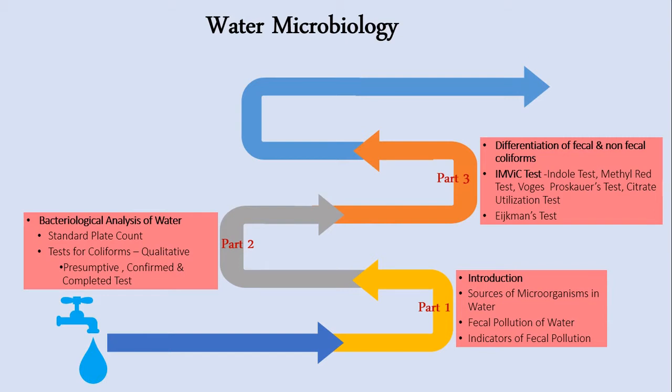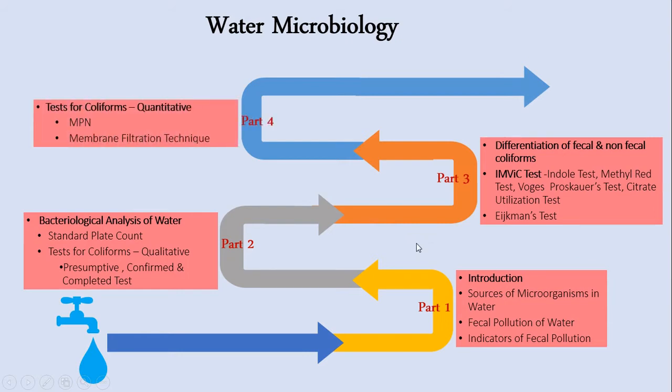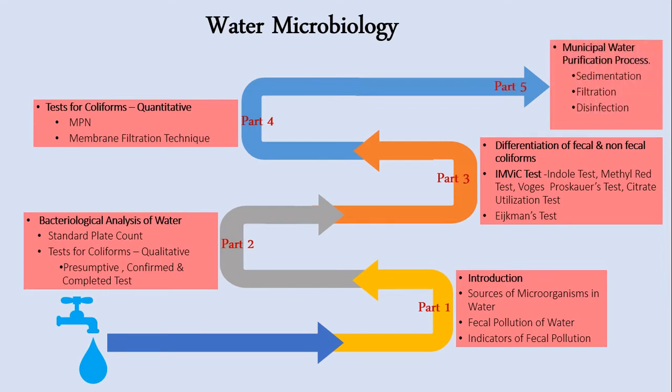In the fourth video, you will learn quantitative tests for coliforms that are used for the enumeration of number of coliforms in the water sample. The common quantitative tests are MPN and membrane filtration techniques. And in the fifth video, we will learn the municipal water purification process and its significance, including steps like sedimentation, filtration, and disinfection.